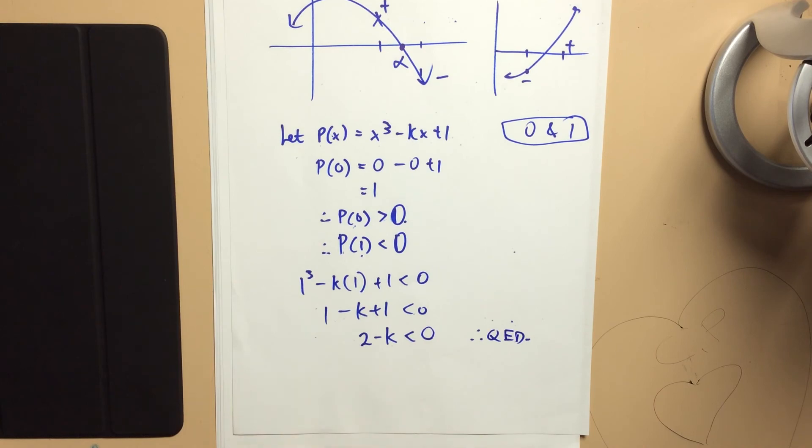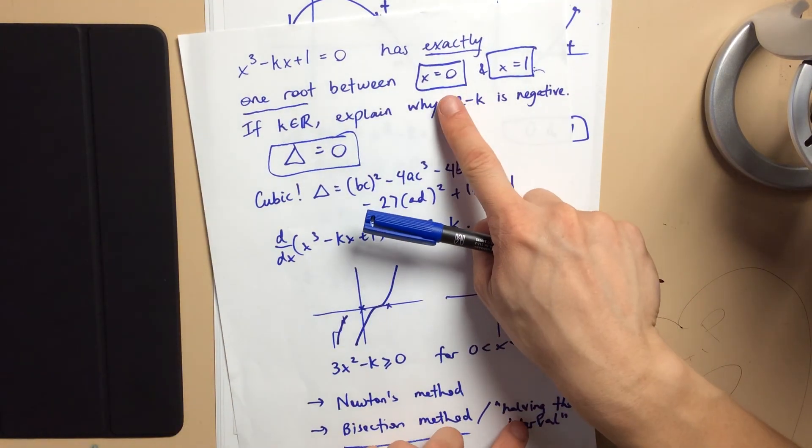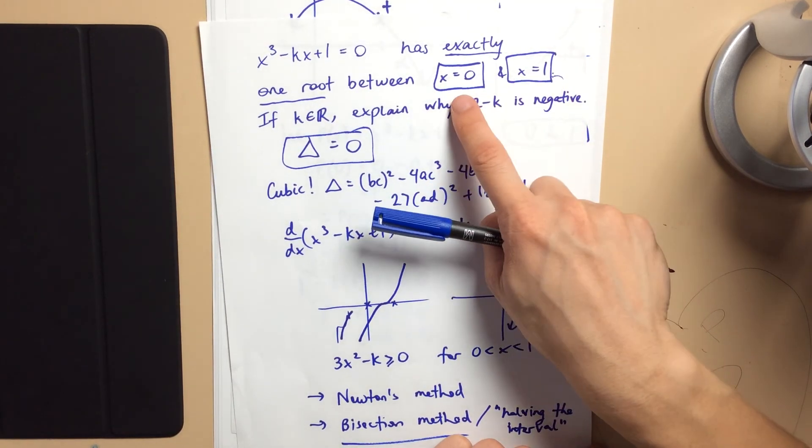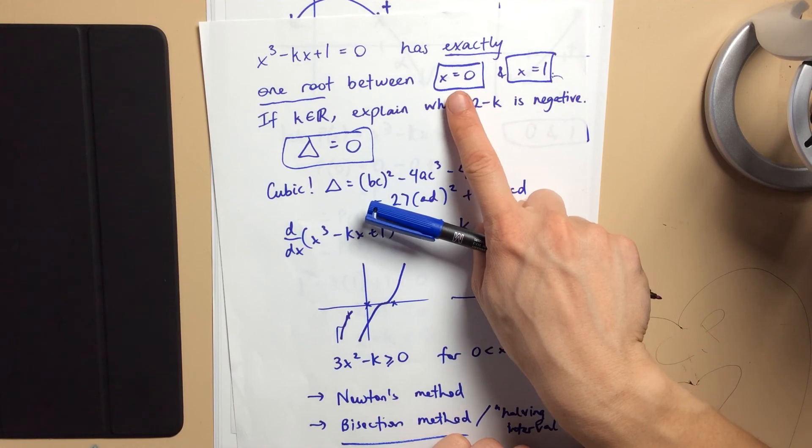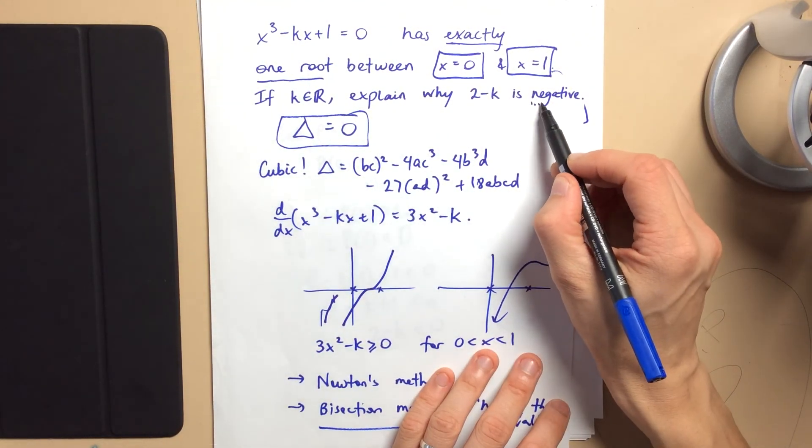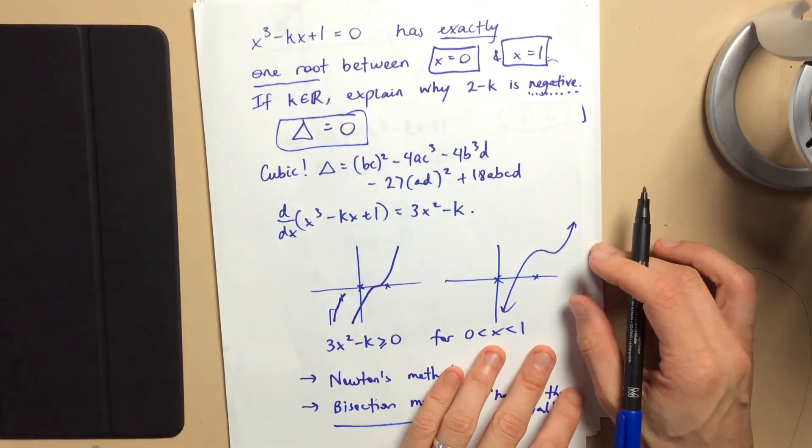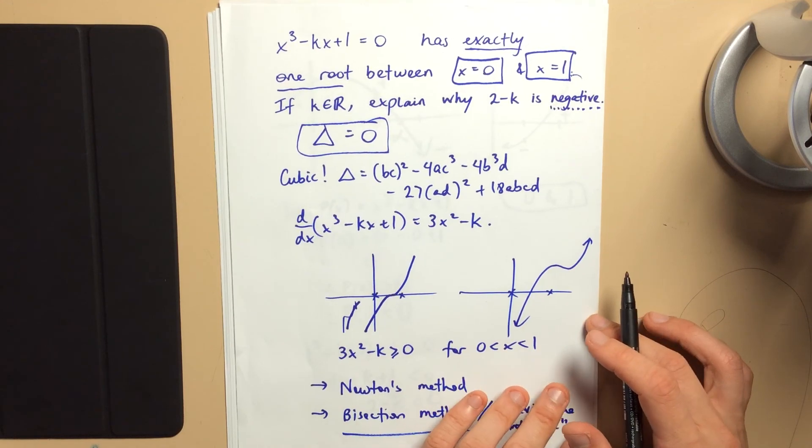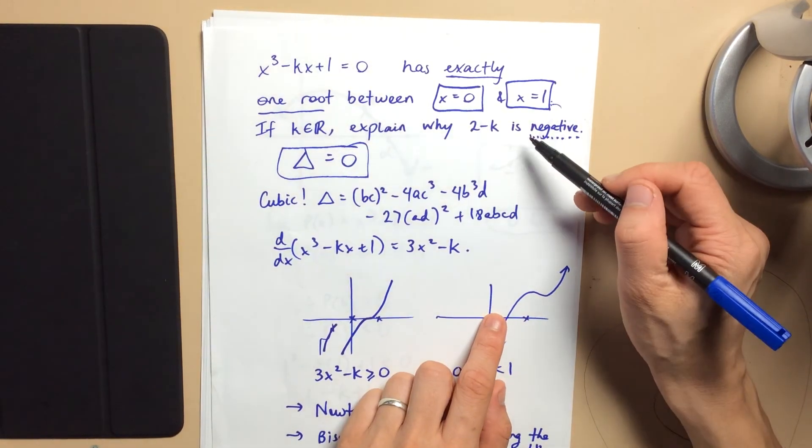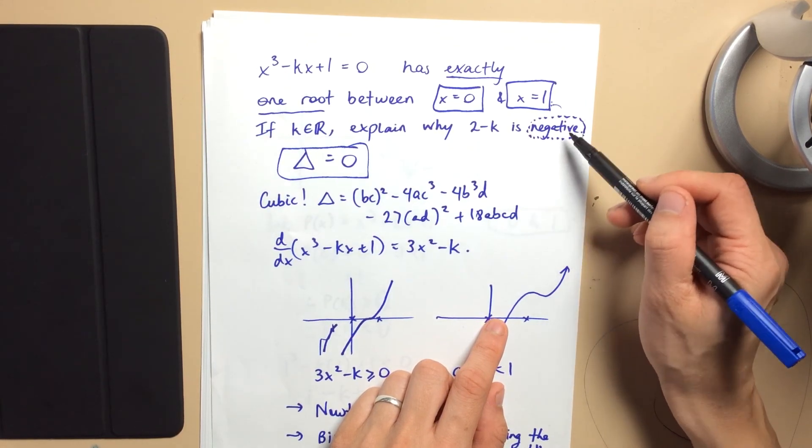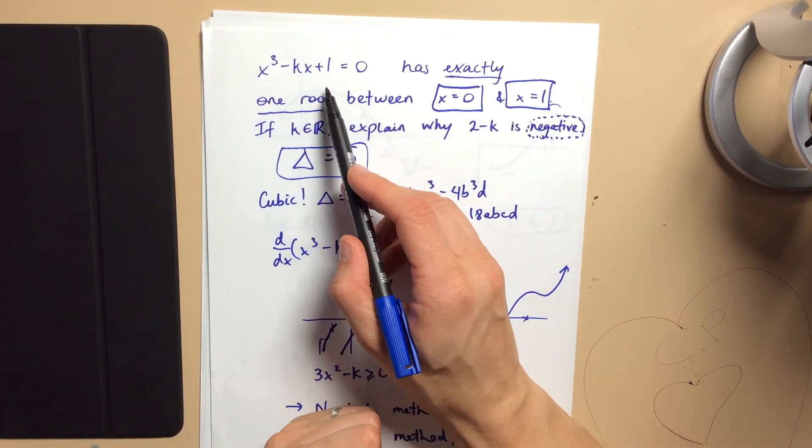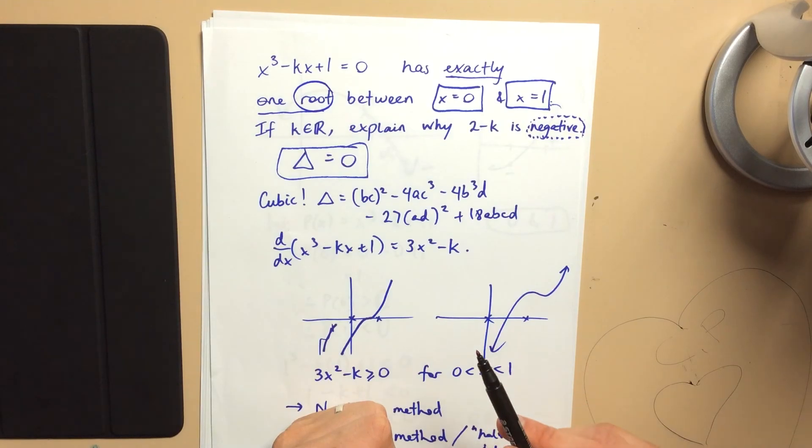So in conclusion, how do you approach this question? You need to really take into account all of the information they've given you. That there's a root, it's between here and here. And so when you're trying to work out a positive negative value, that's a strong inclination that you need to go towards the bisection method or the halving the interval because that's what it depends on, that method. It depends on the positive negative transition that happens before and after a root.